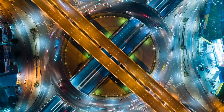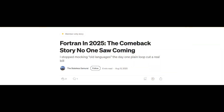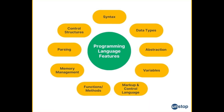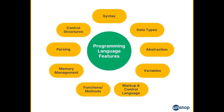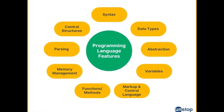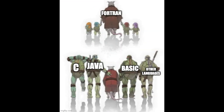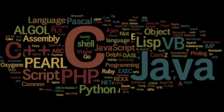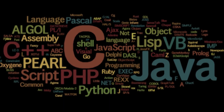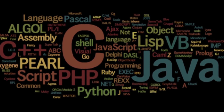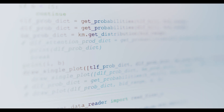Even more than six decades later, FORTRAN's legacy is still very much alive. Its pioneering concepts — high-level syntax, loops, conditionals, and compilers — didn't just make programming easier back then; they laid the foundation for virtually every programming language that followed. Languages like C, BASIC, Python, and Java all borrowed ideas first proven by FORTRAN, showing that the way we code today owes a lot to this groundbreaking language.